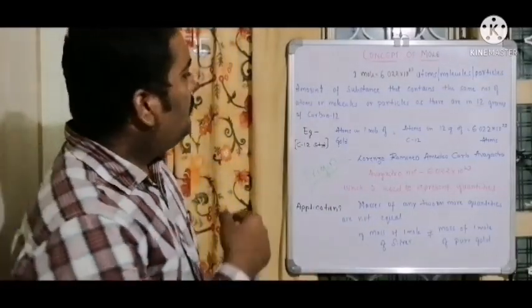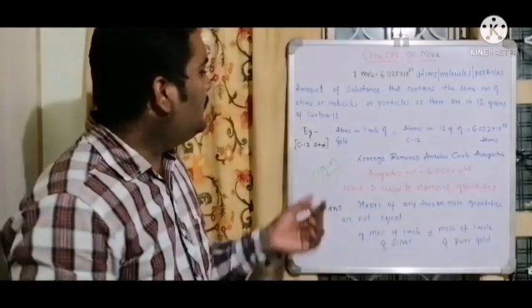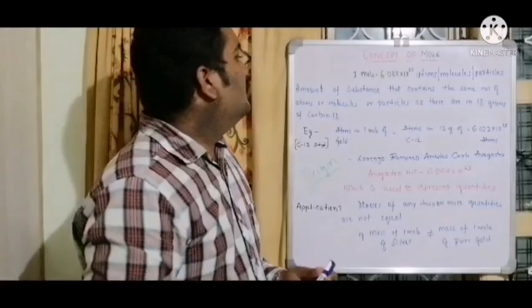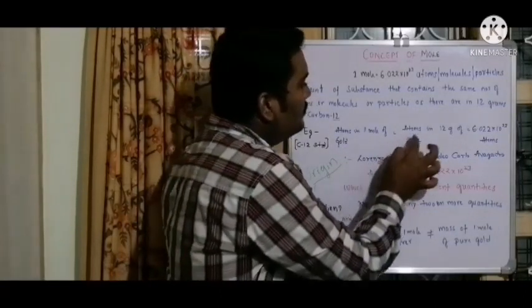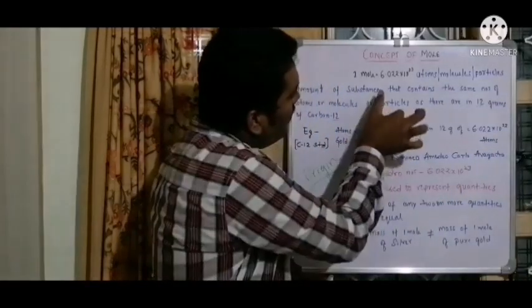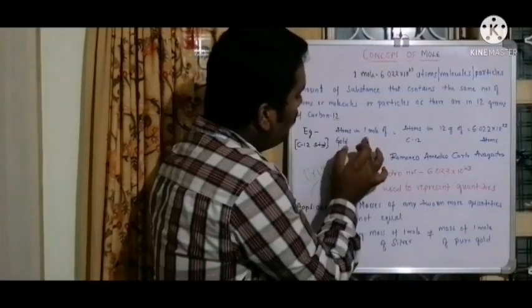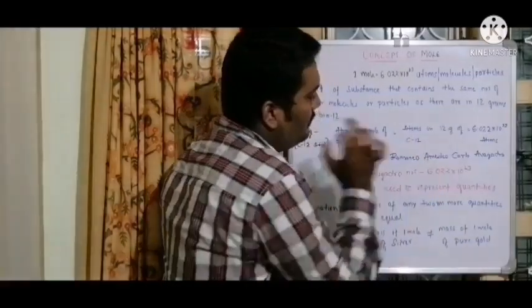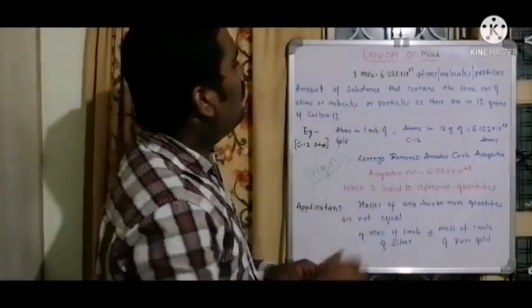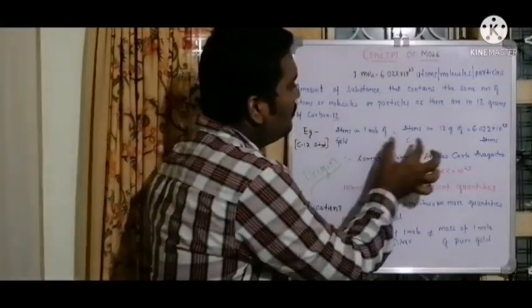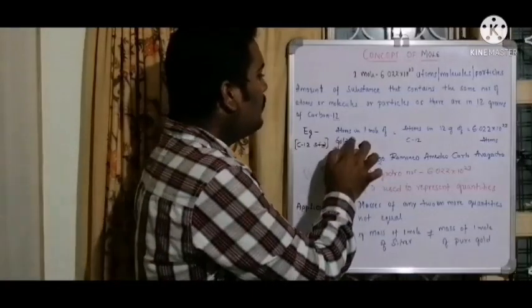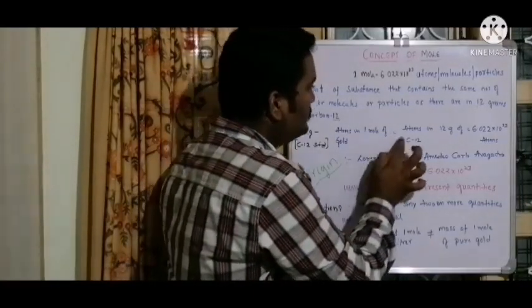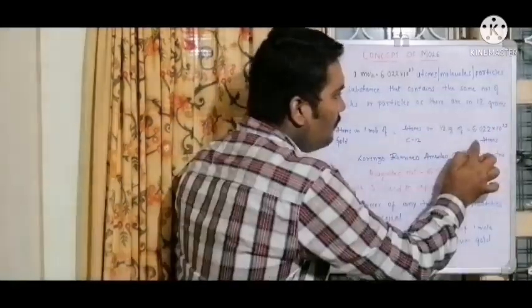We can understand this by looking at examples, taking carbon-12 as a standard. For example, if you measure atoms in one mole of gold, it will be equal to the atoms in 12 grams of carbon-12. So atoms in one mole of gold equals atoms in 12 grams of carbon-12, which is further equal to 6.022 into 10 to the power of 23 atoms.